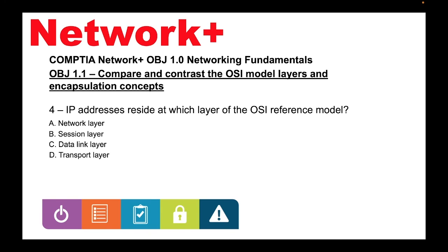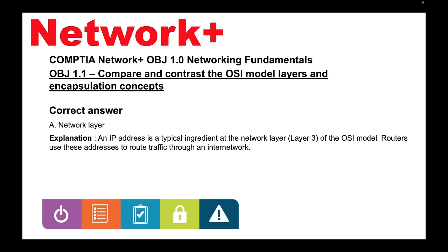Question 4: IP addresses reside at which layer of the OSI reference model? A. Network layer, B. Session layer, C. Data link layer, D. Transport layer. The correct answer is A, Network layer. An IP address is a typical ingredient at the network layer, which is layer 3 of the OSI model. Routers use these addresses to route traffic through an internetwork.